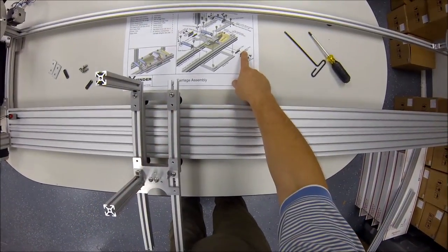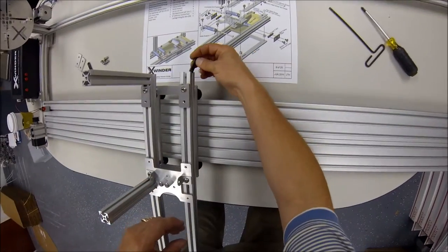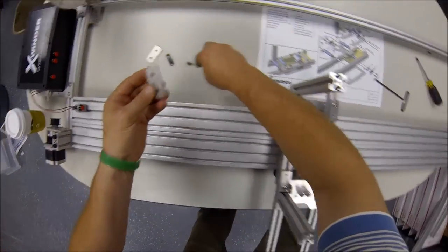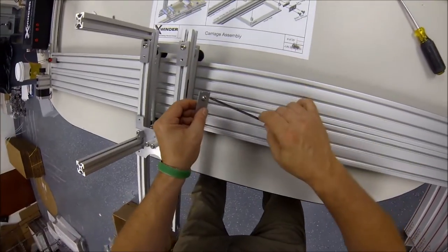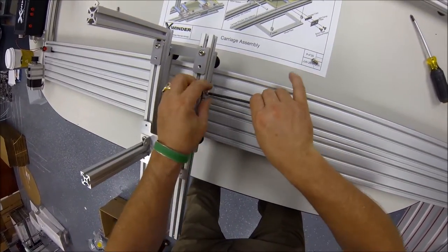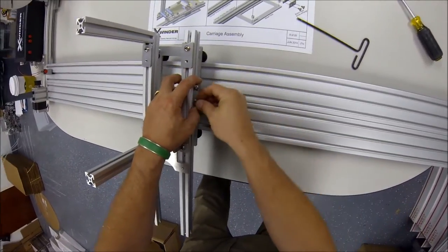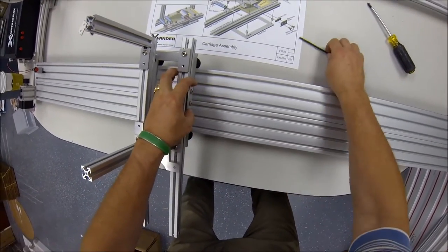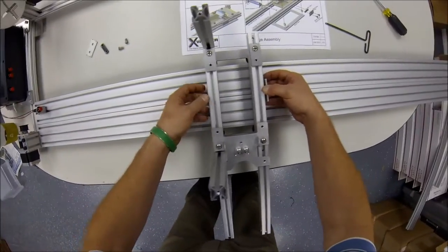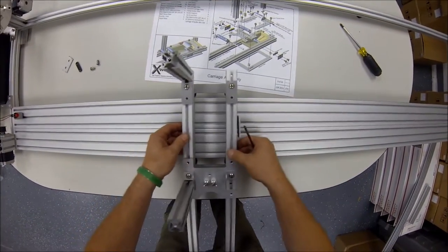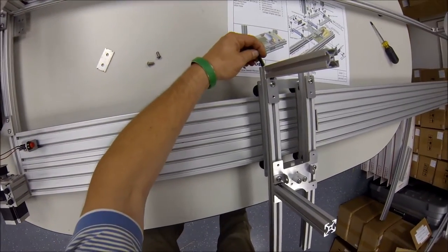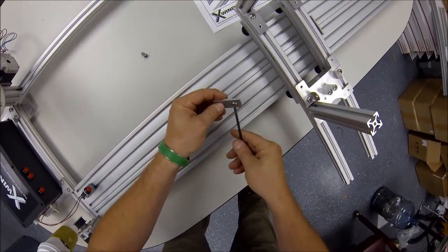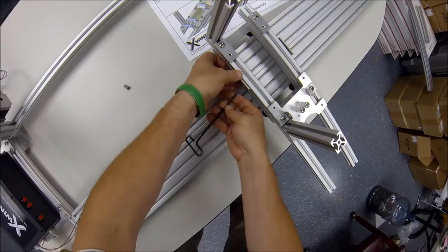We're now going to install the belt clamp plate. To do that, we're going to take a double T-nut, slide it on in, and this is the belt clamp plate, and we'll secure that to the double T-nut. This belt clamp plate will secure the end of the carriage drive belt to the side of the carriage assembly. We'll do the same over here, install the double T-nut and the belt clamp plate.